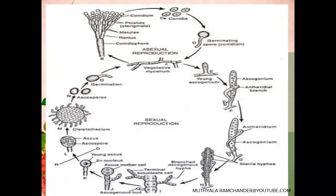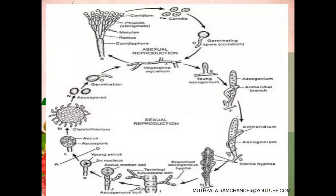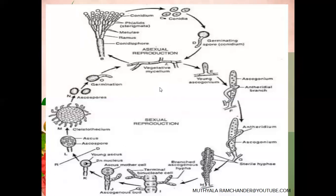When the Ascogonium reaches maturity, at the lateral side of Penicillium, another fungal hypha produces a small club-shaped structure. This small club-shaped structure is called Antheridium. Antheridium is the male reproductive organ of Penicillium. When the antheridium branch develops, it converts into a ribbon-shaped structure, small in size.